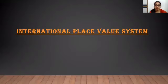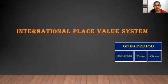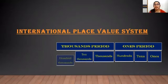The first period on the right is called Ones Period. It consists of the places ones, tens and hundreds. The next period is thousands period which consists of the places thousands, tens thousands and hundreds thousands.